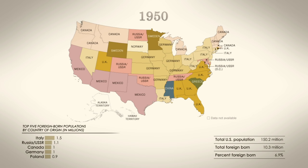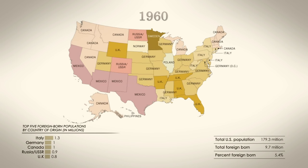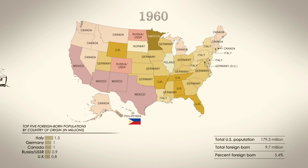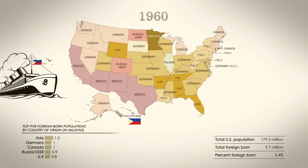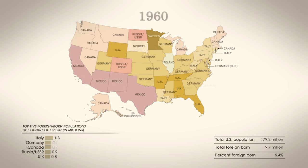Interestingly, Greeks were the largest group arriving in South Carolina. When Alaska and Hawaii became states in 1959, the year before the 1960 census, Canadians simply crossed the border to immigrate to the last frontier, but Filipinos crossed an entire ocean to become the Aloha State's largest group.